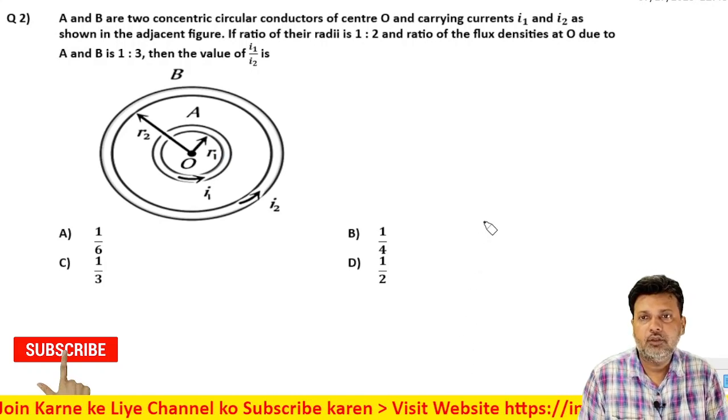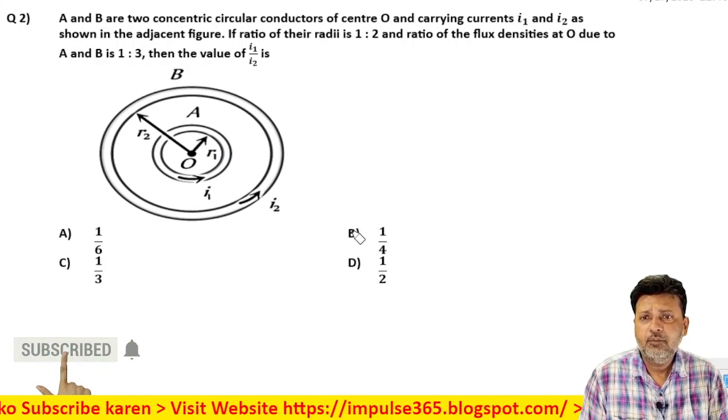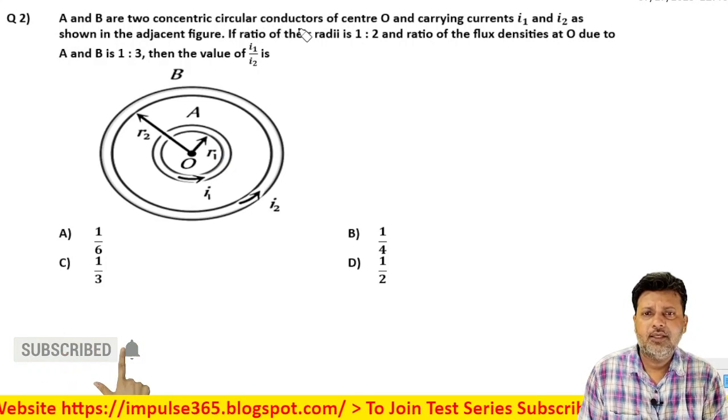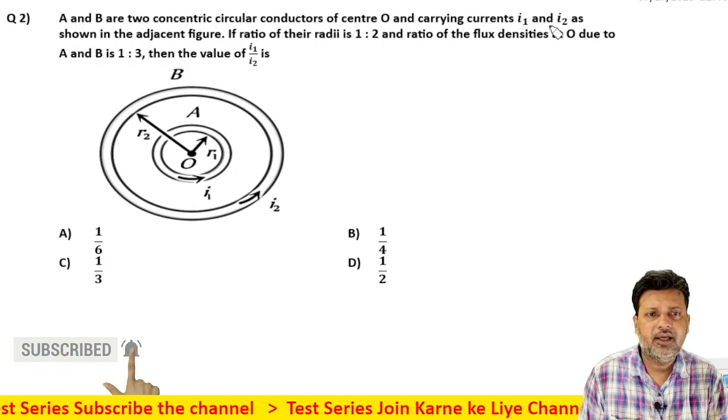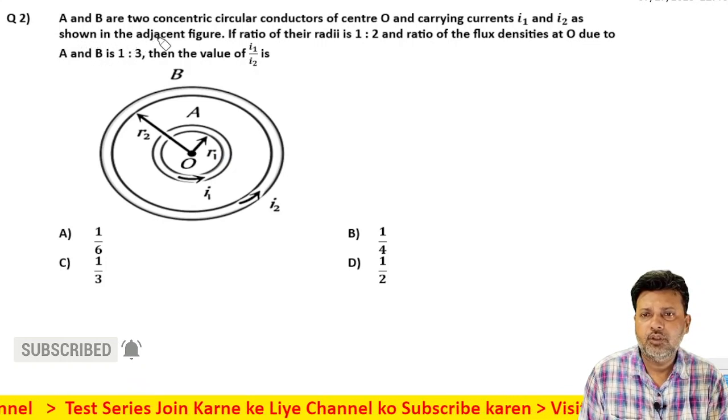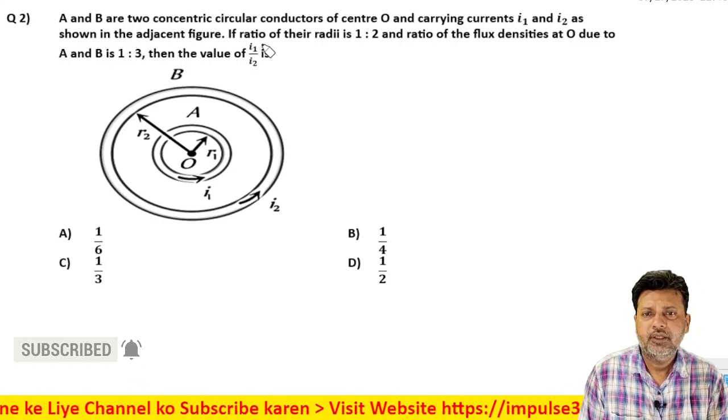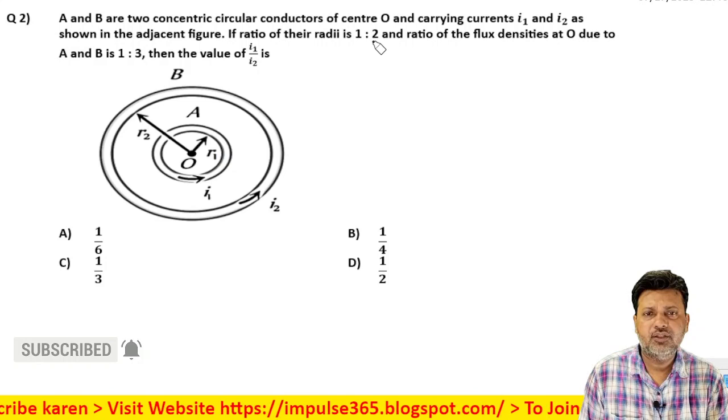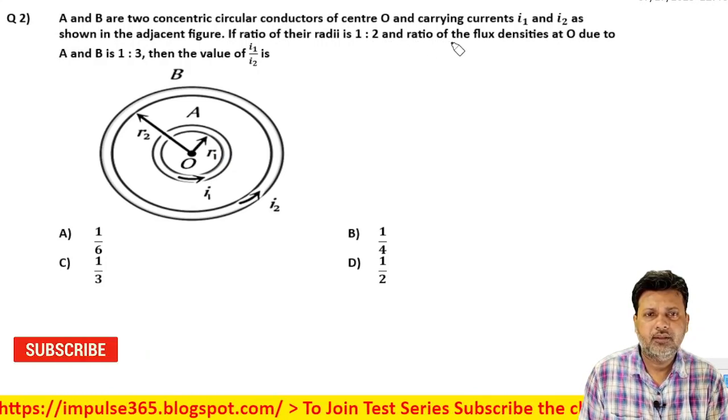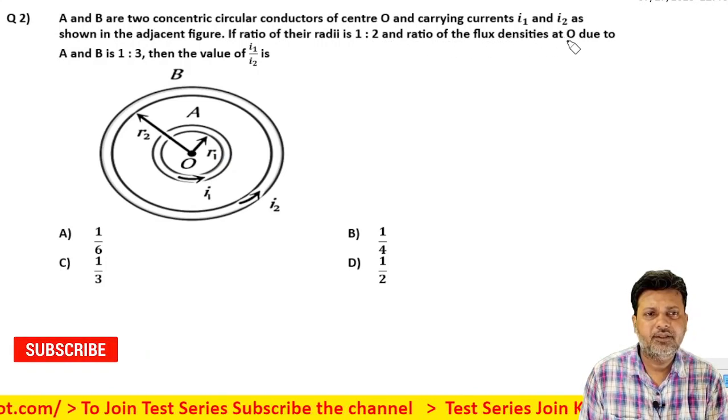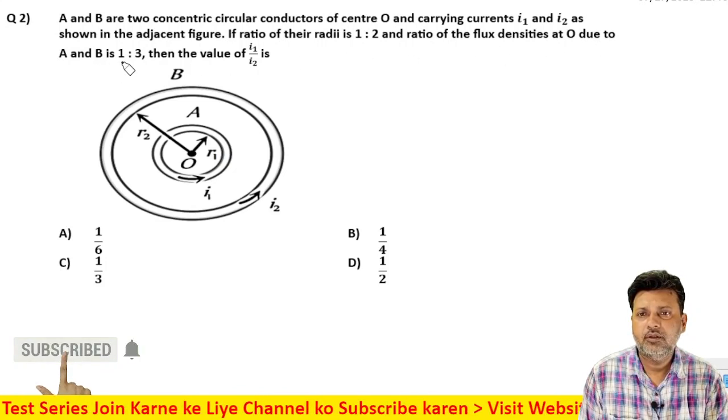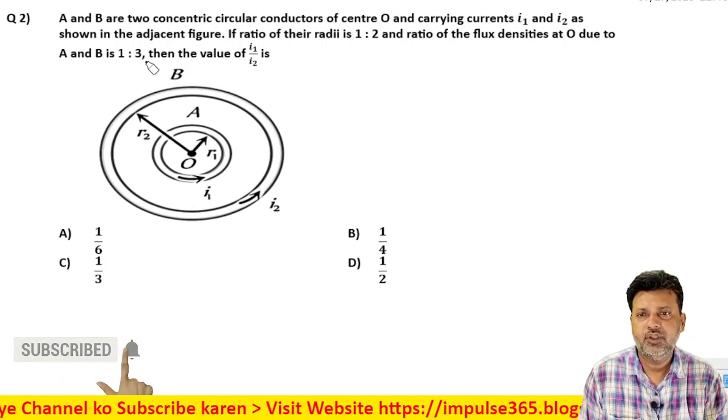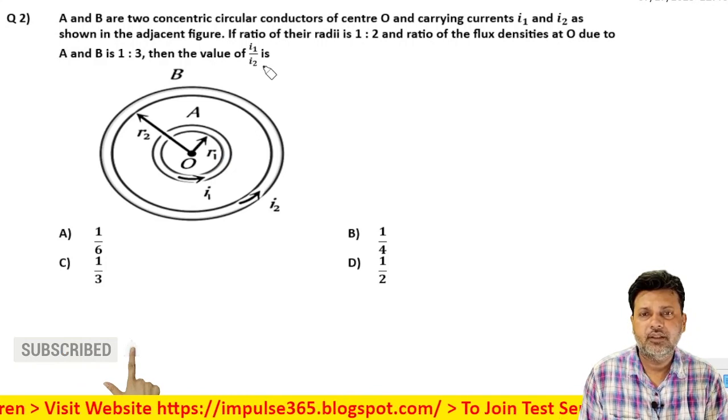Chalo, next question. Question read karte hain. A and B are two concentric circular conductors of center O and carrying current I1 and I2 as shown in the adjacent figure. If ratio of their radii is 1 is to 2, and the ratio of the flux density in the magnetic field at O due to A and B is 1 is to 3, then the value of current kitni hogi.